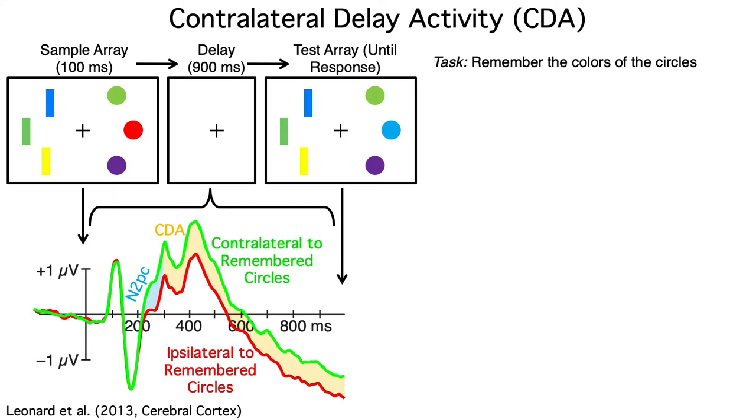The N2PC and CDA are added on to other components, but you can isolate them by looking at the difference between the contralateral and ipsilateral waveforms. Although they're both contralateral negativities, the N2PC and CDA have different scalp distributions, so they're distinct components.